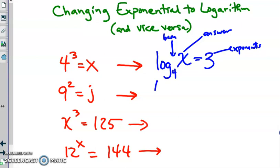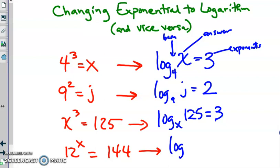So this one here will be log base 9 of our answer equals 2. This is log base x of my answer which is 125 equals 3. And the last one is log base 12 of my answer equals x, which is my exponent. I'll try to put the x, the variable, in different places so that you don't get the habit of just putting x with a variable in the same place each time.